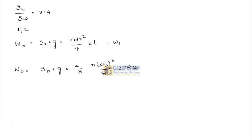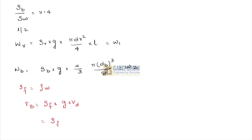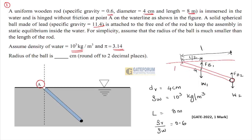The buoyancy force equals density of fluid times g times volume: F_B = ρ_water × g × [(π d_r²/4) × L + (4/3) × π × (d_b/2)³]. Now the moment about point A will be taken and set equal to zero to find the equilibrium condition.